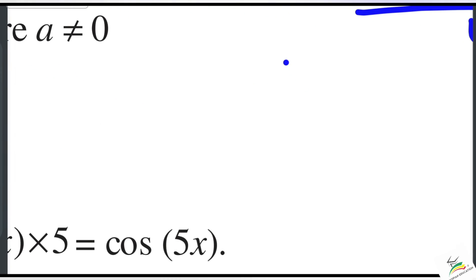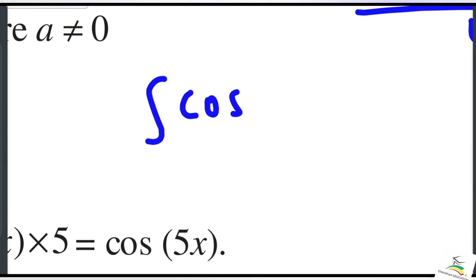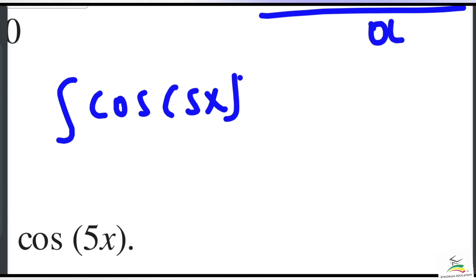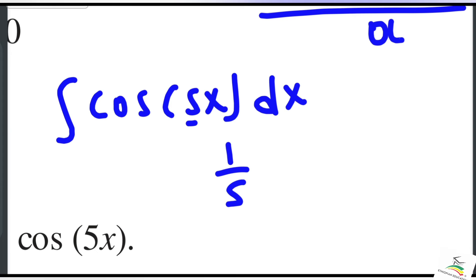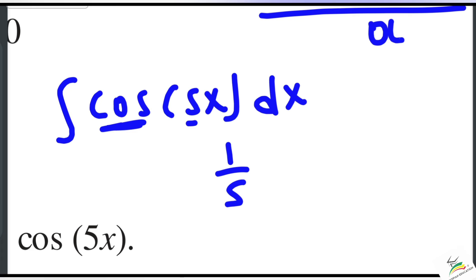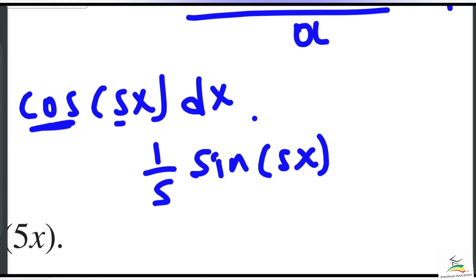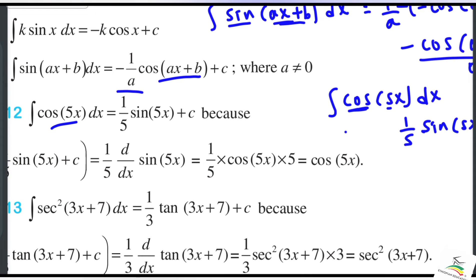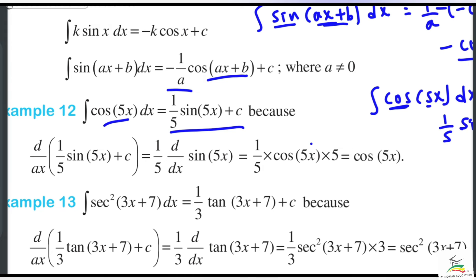Example: integration of cos 5x dx. The coefficient of x is 5, so 1 over 5 times — cos integrates to sin — giving positive sin 5x. So the answer is 1 over 5 times sin 5x plus C.